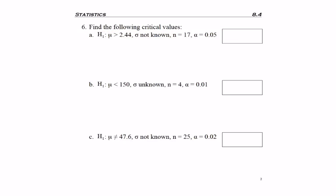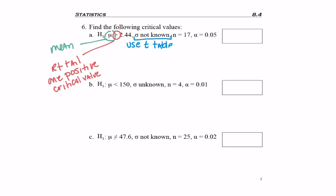First thing you should notice is in the alternate hypothesis we have mu, which means we're studying a test about a mean. Because we have greater than, we have a right tail test, which means we're going to have one positive critical value. And because sigma is not known, we'll be using the t table. So when you have a mean with sigma unknown, you use the t table.